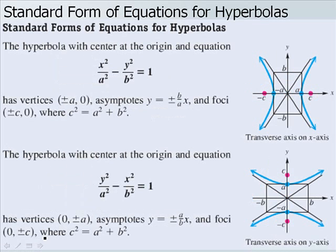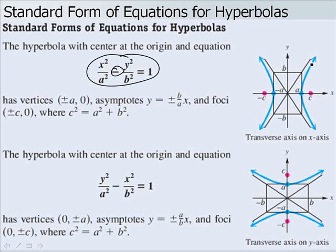With a hyperbola, the equation looks essentially the same except we are subtracting. Instead of the two sides coming together as in an ellipse to make a round shape, they go out in the opposite direction. For the horizontal hyperbola, y squared over a squared minus x squared over b squared is the form.